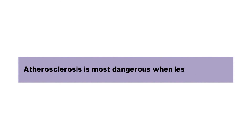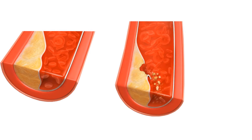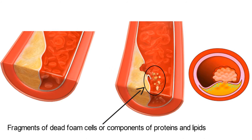Atherosclerosis is most dangerous when lesions rupture. When an atherosclerotic lesion ruptures, the contents of the lesion spill out into the blood vessel. This can lead to a sudden burst of the contents of the lesion into the bloodstream. Fragments of dead foam cells or components of proteins and lipids can all be suddenly released into circulation when a lesion ruptures. When these components are released into the blood, they begin to interact with each other as well as the wall of the blood vessel, and a thrombus begins to form.